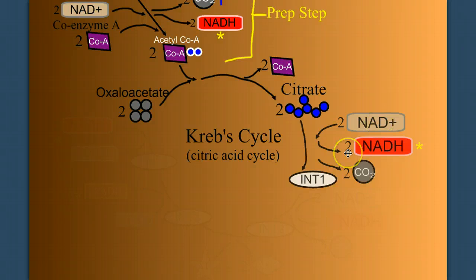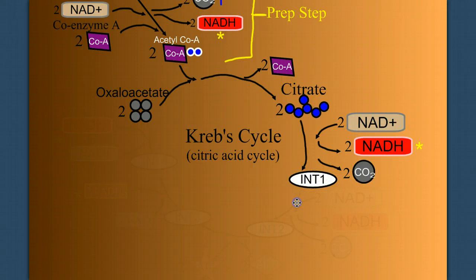and kicks out high energy electrons to reduce NAD+ into NADH. In doing so, each citrate loses a carbon, so we make two carbon dioxide because we have two citrates. I'm not going to require you to learn the name of this intermediate, and I'll show you why in just a moment. But that intermediate is then converted into a second intermediate, and we have the same process. We reduce two more NAD+ to make two more NADH, and we kick out two more carbon dioxides.